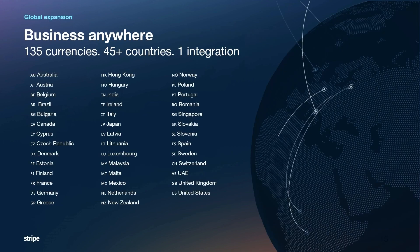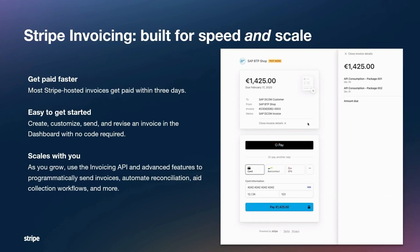If you're planning to open a business, you can do it with Stripe from 45 different locations, whether it's North America, South America, Europe, Asia, or Australia. You can create a Stripe account in any of those countries and start accepting payments from customers anywhere in the world, in 135 different currencies, with one single integration.